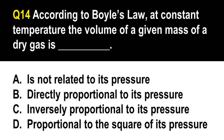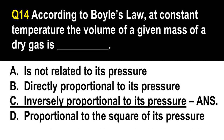Question number 14, the second to the last question. According to Boyle's law, at constant temperature, the volume of a given mass of a dry gas is: A. Not related to its pressure. B. Directly proportional to its pressure. C. Inversely proportional to its pressure. D. Proportional to the square of its pressure. The correct answer is letter C, inversely proportional to its pressure. Boyle's law states: P₁V₁ = P₂V₂. This means that if you increase the pressure of a gas, then the volume of that gas decreases.